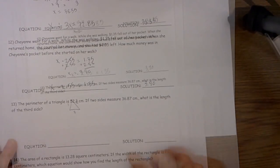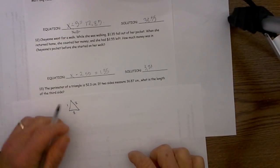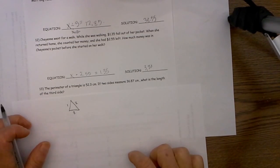And finally let's go ahead and look at problem number 3. The perimeter of a triangle is 52.3 cm. If two sides equal measure equals 36.87 what is the length of the third side?